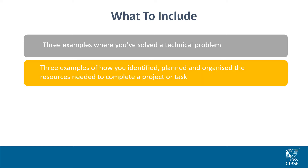You'll also need three examples of how you have identified, planned and organised resources. You could explain how you took into consideration cost, quality, safety and environmental impacts. Here you could also make reference to what equipment was used, how any data was gathered and analysed, or how you initiated the project to produce a desired outcome.